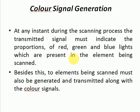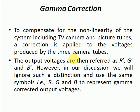With a specified source of white light, the three cameras are adjusted to give equal output voltage. Gamma correction is applied to compensate for the non-linearity of the system, including the TV camera and picture tube. This correction is applied to the voltages produced by the three camera tubes. The corrected output voltages are referred to as R', G', and B'. However, in our discussion we will use the same symbols R, G, and B to represent the gamma-corrected output voltages.